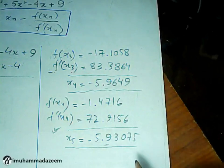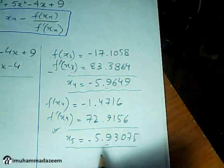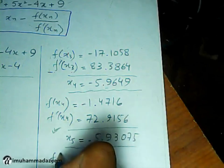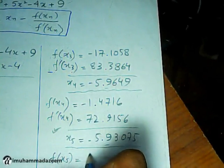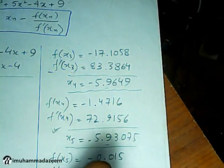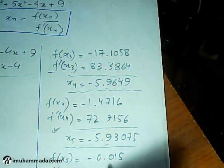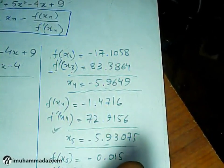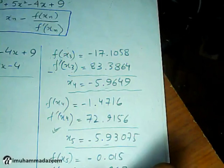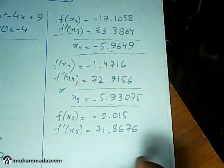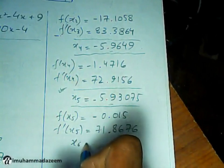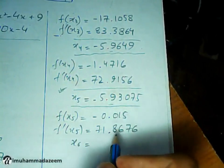So we follow the same steps again. f(X₅) equals minus 0.015, and f prime of X₅ equals 71.8676. X₆ comes out to be minus 5.9305.